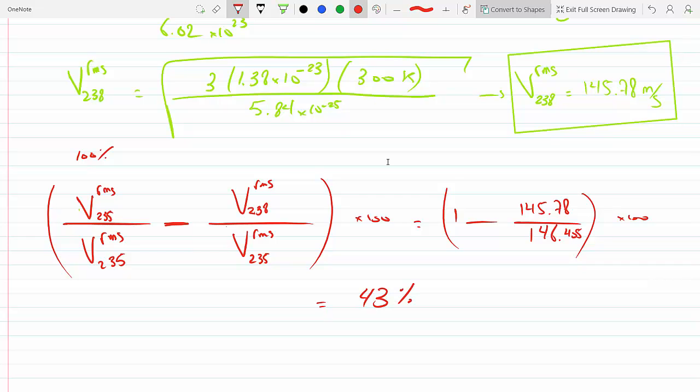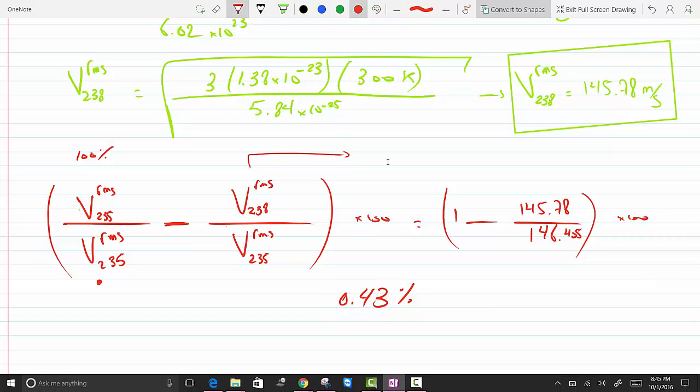You would get the percent difference between them is 0.43%, which means that the lighter uranium travels... the lighter uranium, which is this, if you move this term here to the left-hand side, it's 0.43% faster than the 238 velocity.